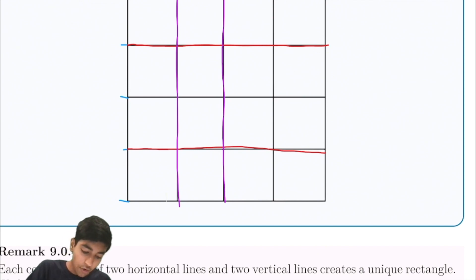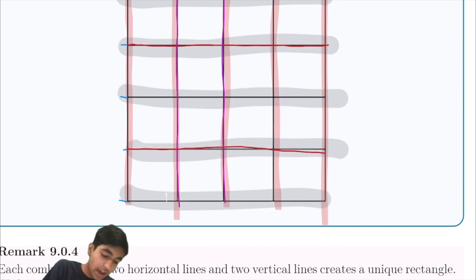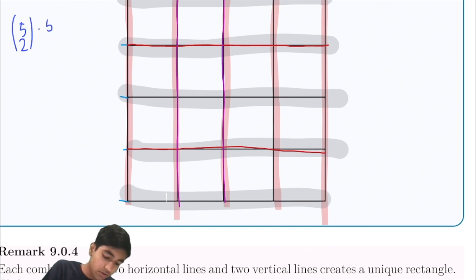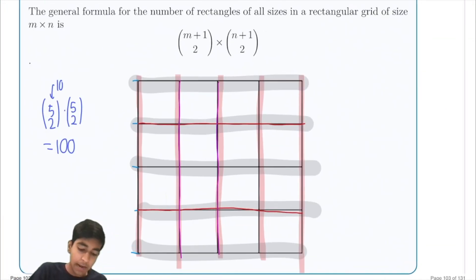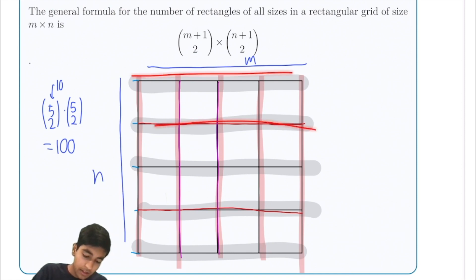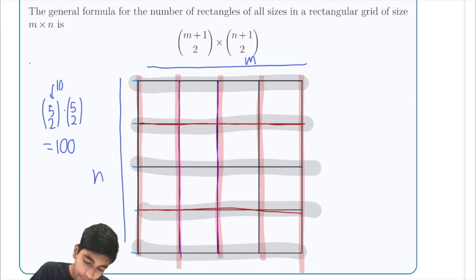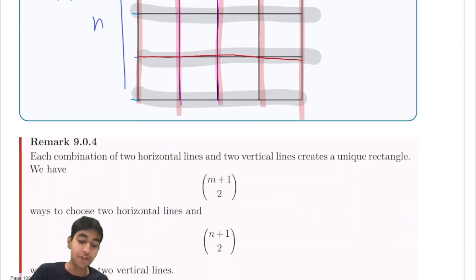We must select two vertical lines and two horizontal lines. In total, we have five vertical lines, of which we must select two, and we also have five horizontal lines. So the number of ways is just five choose two for the horizontal lines and five choose two for the vertical lines. That's 100, because five choose two is just 10. The general formula is m+1 choose 2 times n+1 choose 2 for an m by n grid — a really cool application of combinations to geometric counting.